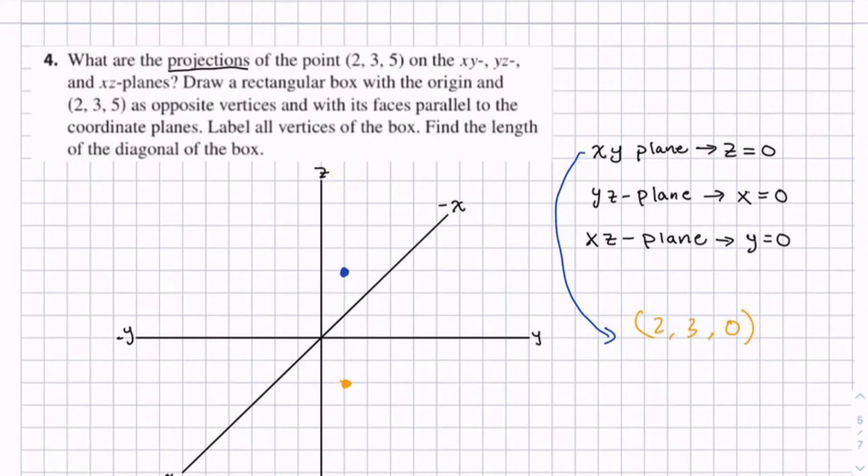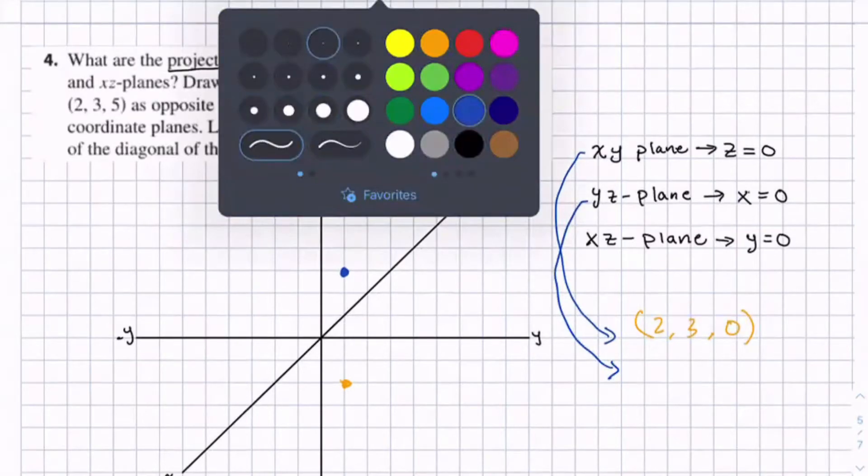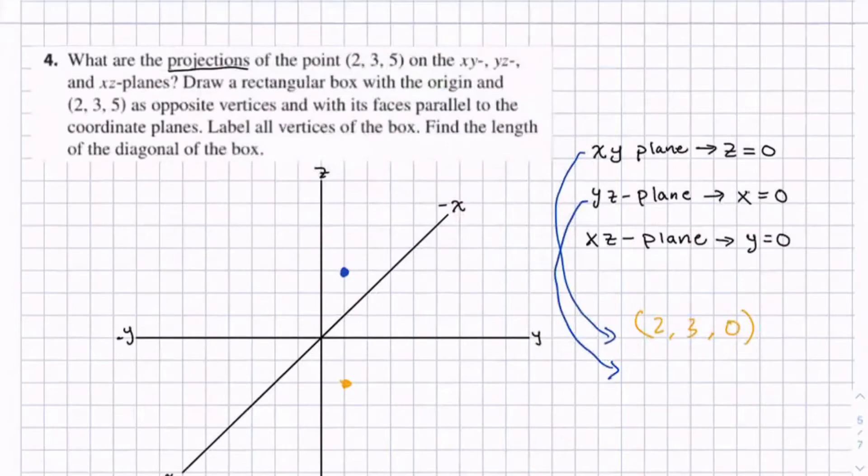So now let's do the projection on the yz plane. So this happens when x equals 0. So we'd have 0, 3, 5.